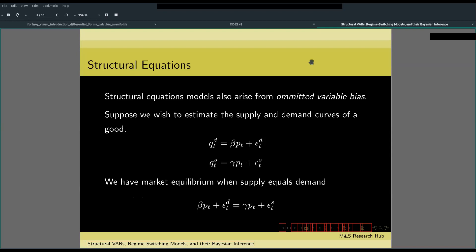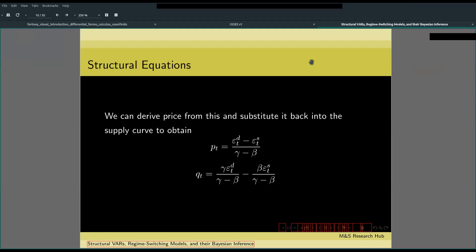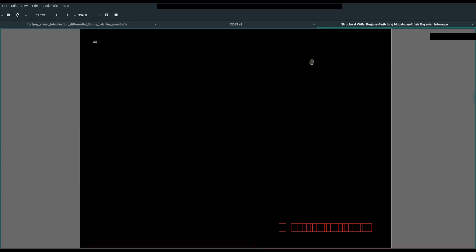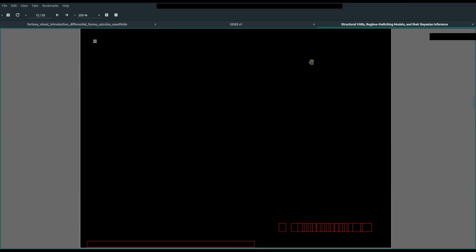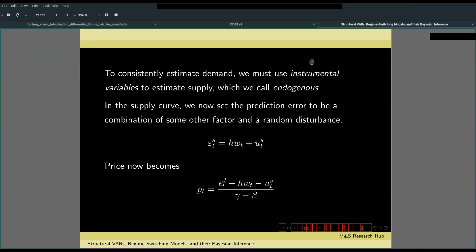Structural equation models may also arise from what we call omitted variable bias. If we want to estimate the supply and demand curves of a good, we need to derive the condition where supply equals demand to obtain equilibrium. After performing a few derivations, we may find price, then plug it into the demand curve. If we estimate the demand curve using naive OLS, we gain a biased estimate because the parameters estimated are affected both by supply and demand elasticities. In order to prevent bias, we use instrumental variables to estimate the endogenous variable supply.